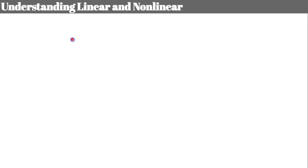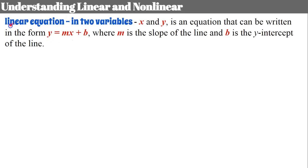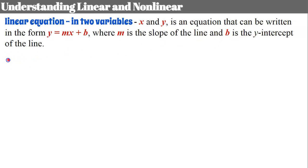Understanding linear and nonlinear — we go back to what we know about linear equations. In two variables, x and y, remember our input and our output, our independent variable and our dependent variable. This is an equation that can be written in the form y = mx + b, slope-intercept form, where m is the slope of the line and b is the y-intercept.